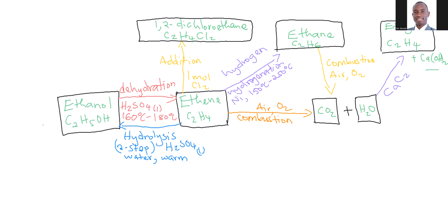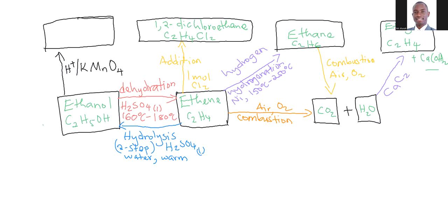To convert ethanol to ethanoic acid, I would need to do oxidation. What I need to add is acidified potassium dichromate(VI) or acidified potassium manganate(VII). Adding acidified potassium manganate(VII), we end up with ethanoic acid — CH3COOH. This process is known as the oxidation of ethanol.